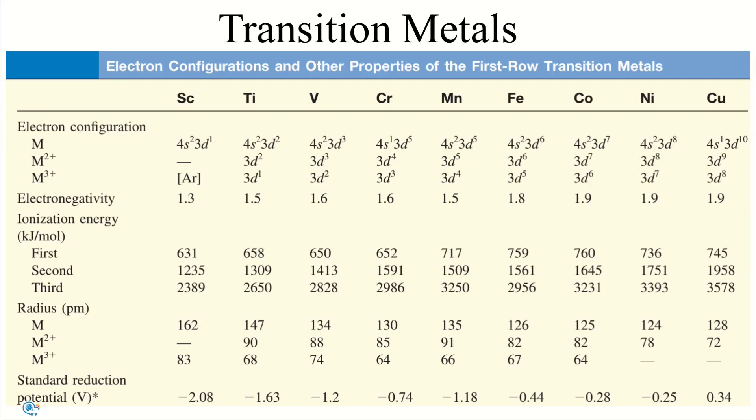Because it takes more energy to remove the third electron from the metals near the end of the row than from those near the beginning, the metals near the end tend to form metal 2+ ions rather than metal 3+ ions.